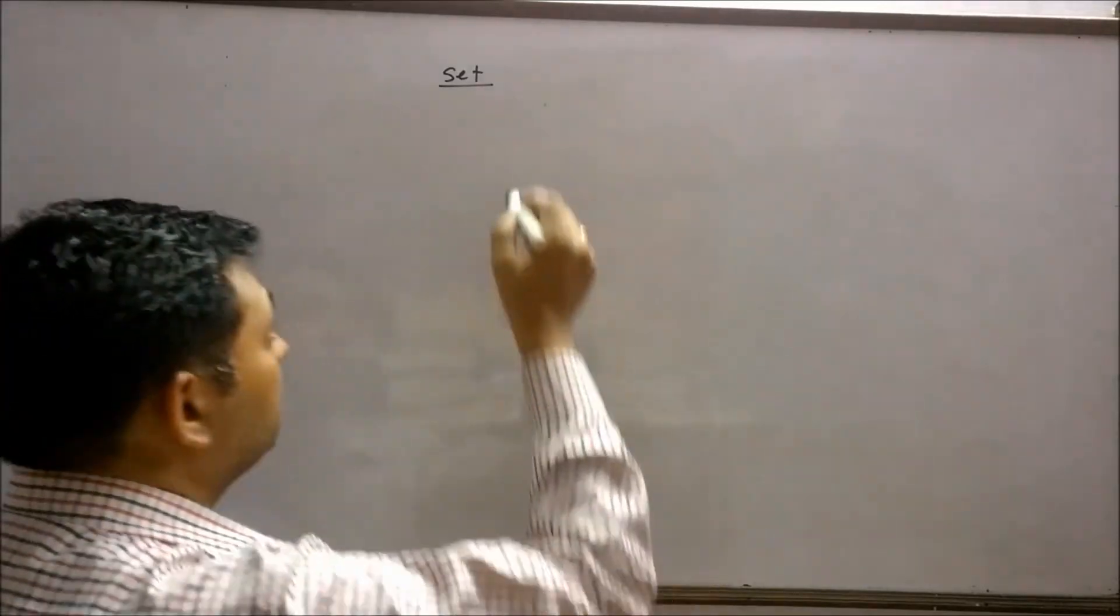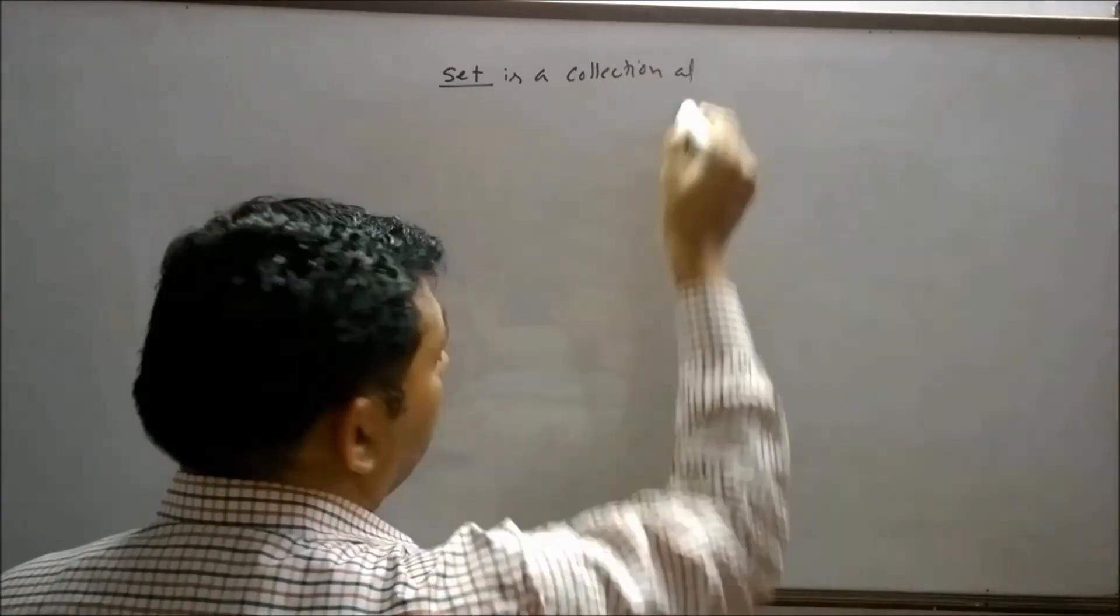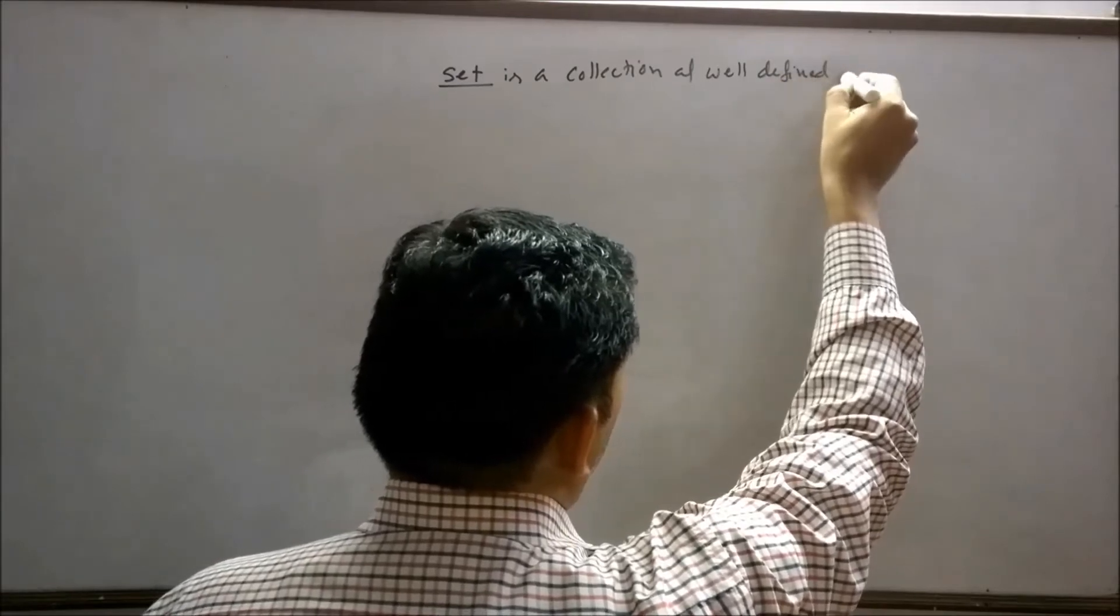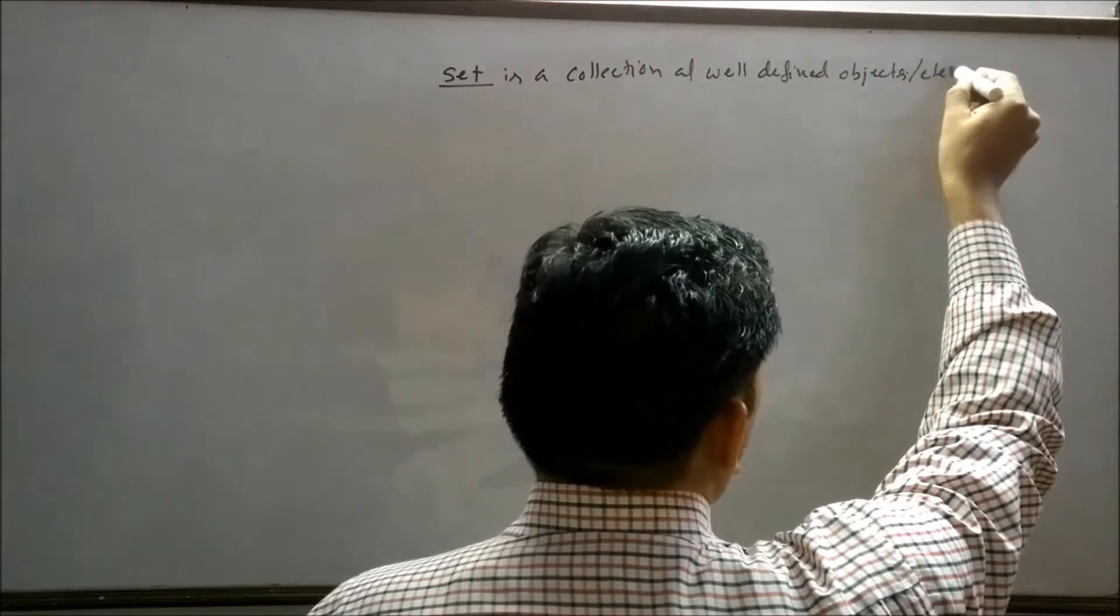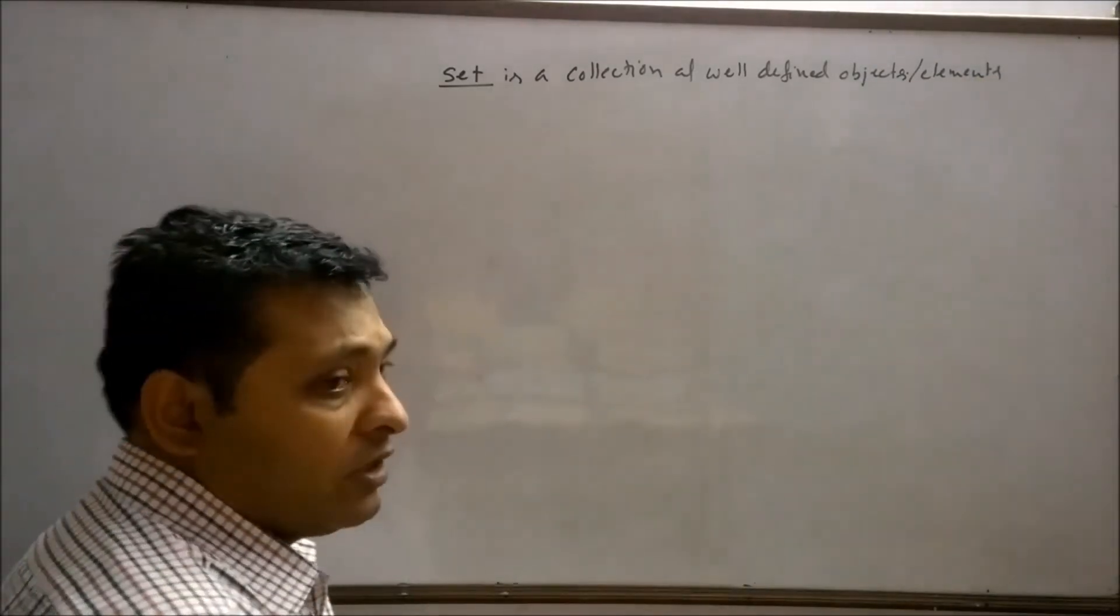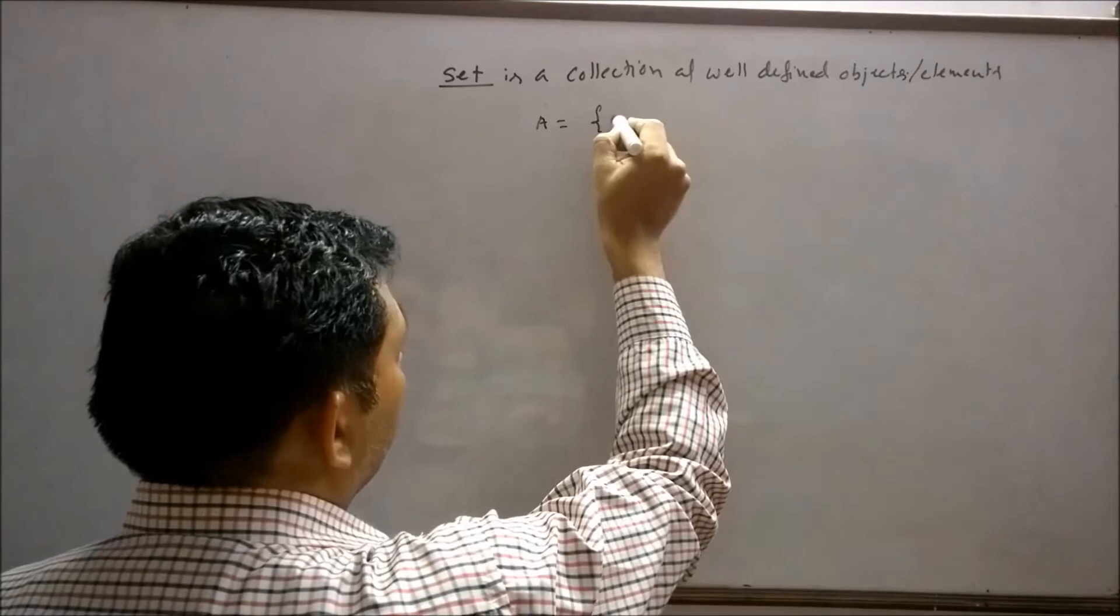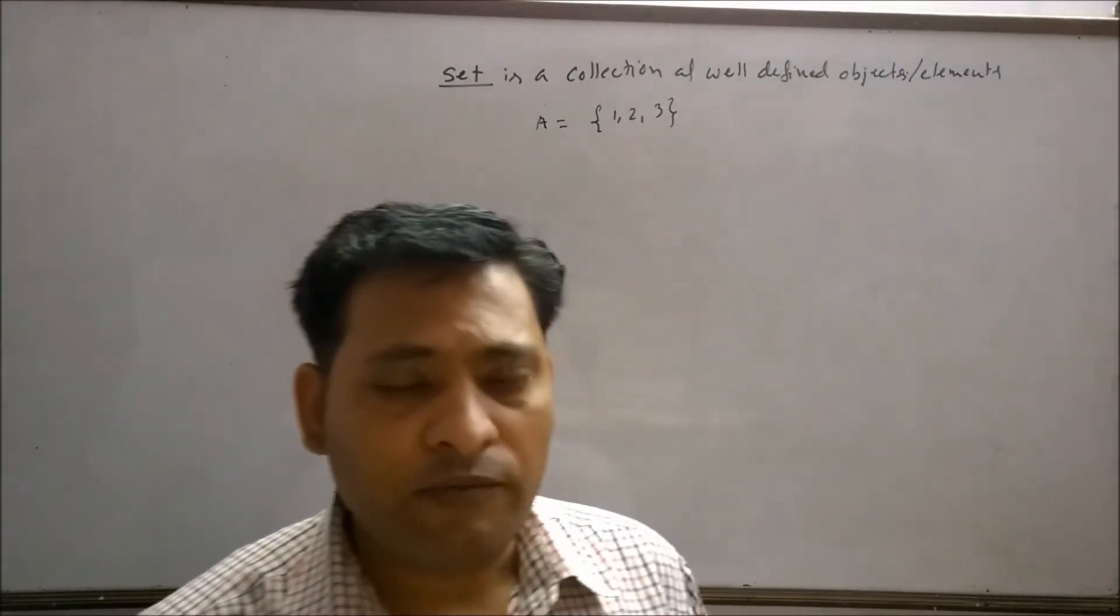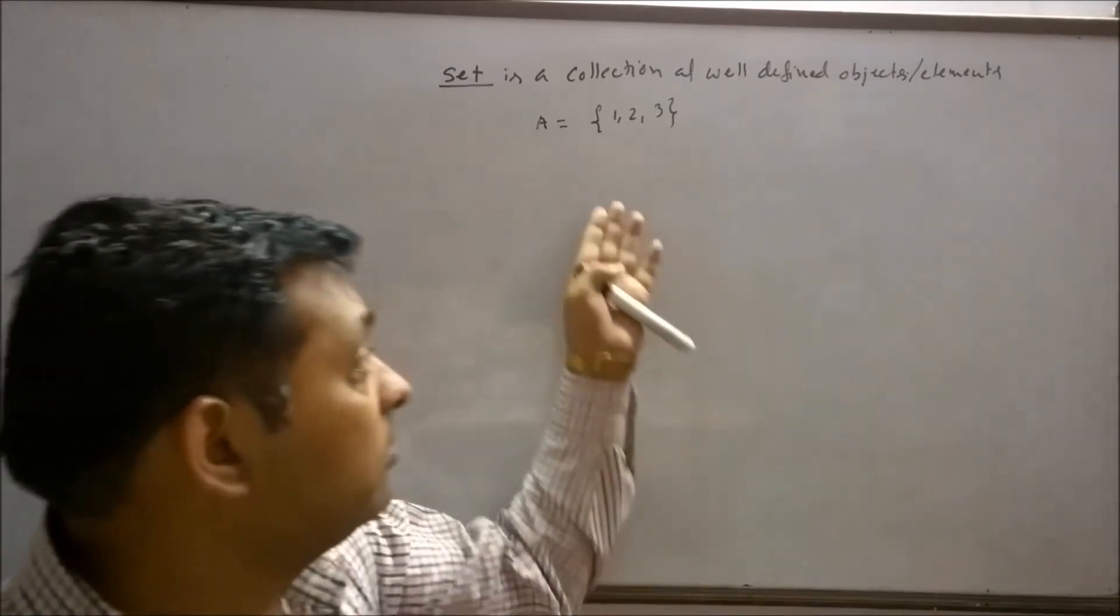Set is a collection of well-defined objects or elements. For example, if we take a set A of first three natural numbers, it means A equals to 1, 2, 3. Only three elements will be there in first three natural numbers. If I say first three natural numbers is 1, 2, 3, definitely from your sides, the answer will be same. So it means these elements are well-defined.